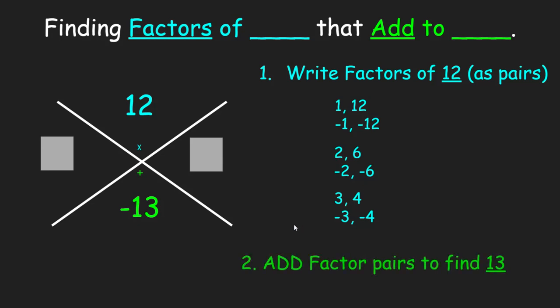So 1 plus 12 equals 13, negative 1 plus negative 12 equals negative 13. If you wanted to be done at this point you could. You could just say I know my factor pairs are negative 1 negative 12 and write them in. But again, for today's purposes I'm going to go ahead and add so that you can see.